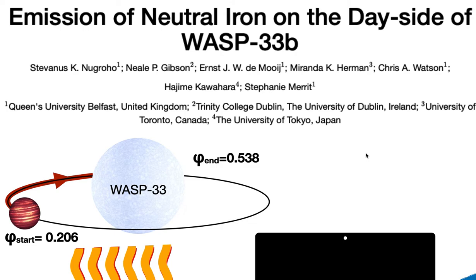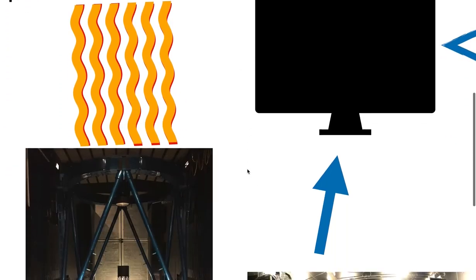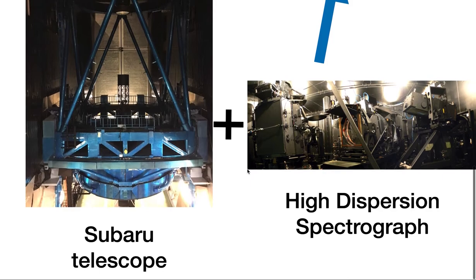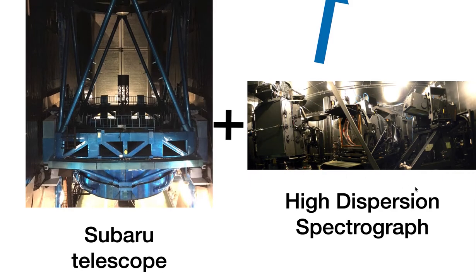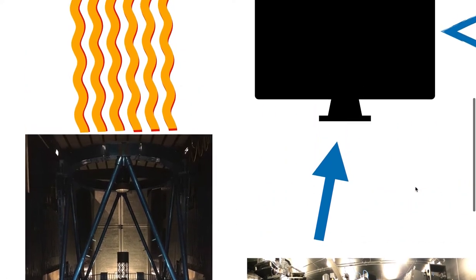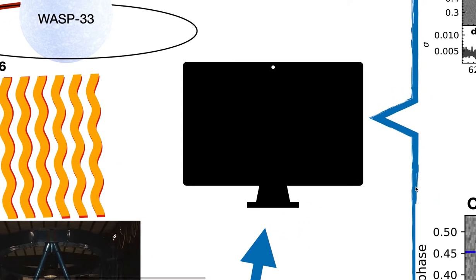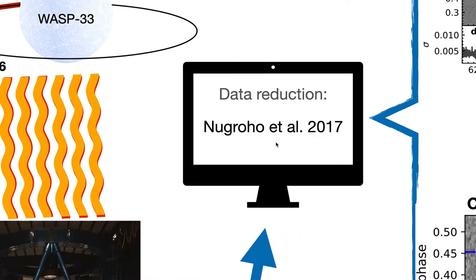Therefore, we searched for the neutral iron signature on the day side of WASP-33b using our old datasets. This dataset is the same one that we used to detect titanium oxide in 2017. The data covers the planetary orbital phase of 0.2 until 0.538. We obtained the data using the Subaru telescope and high-dispersion spectrograph. To see the details on the data reduction, you can read our old paper, Nugroho et al. 2017.